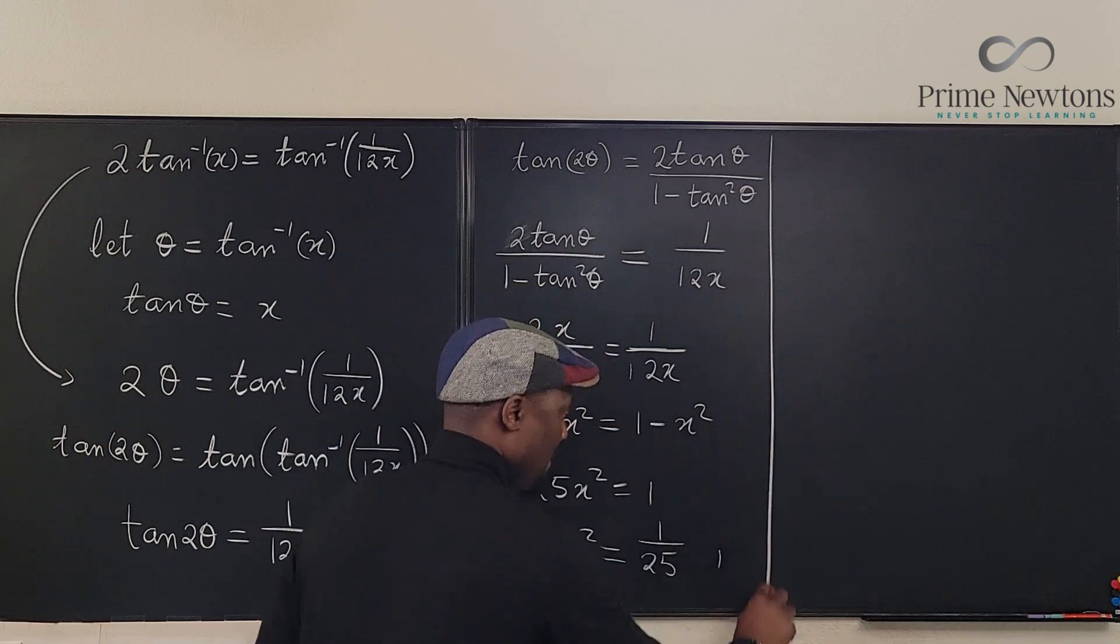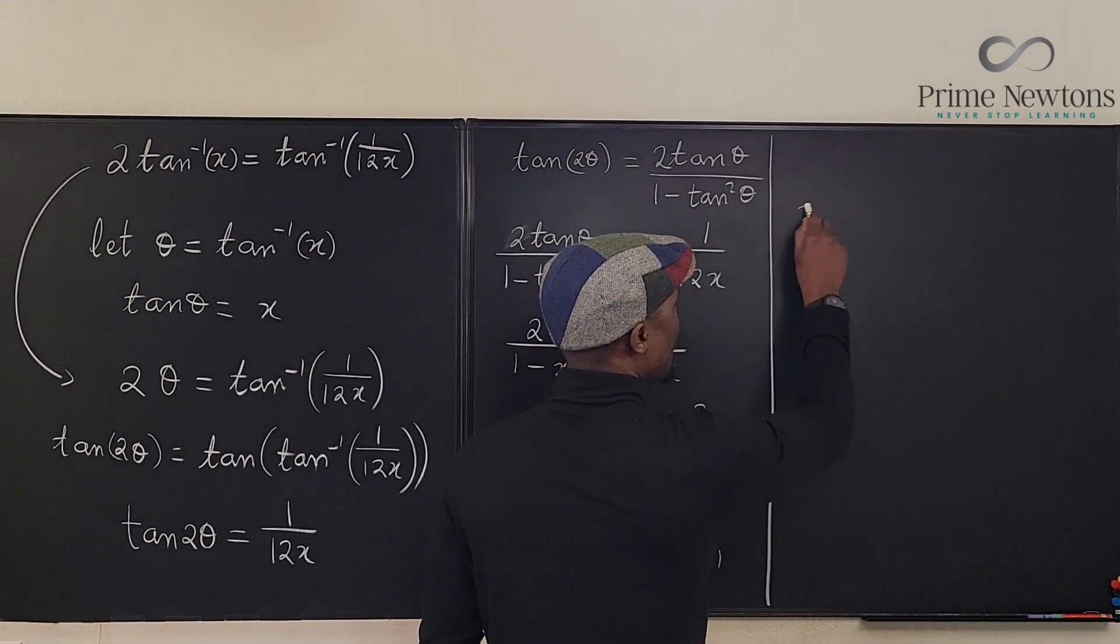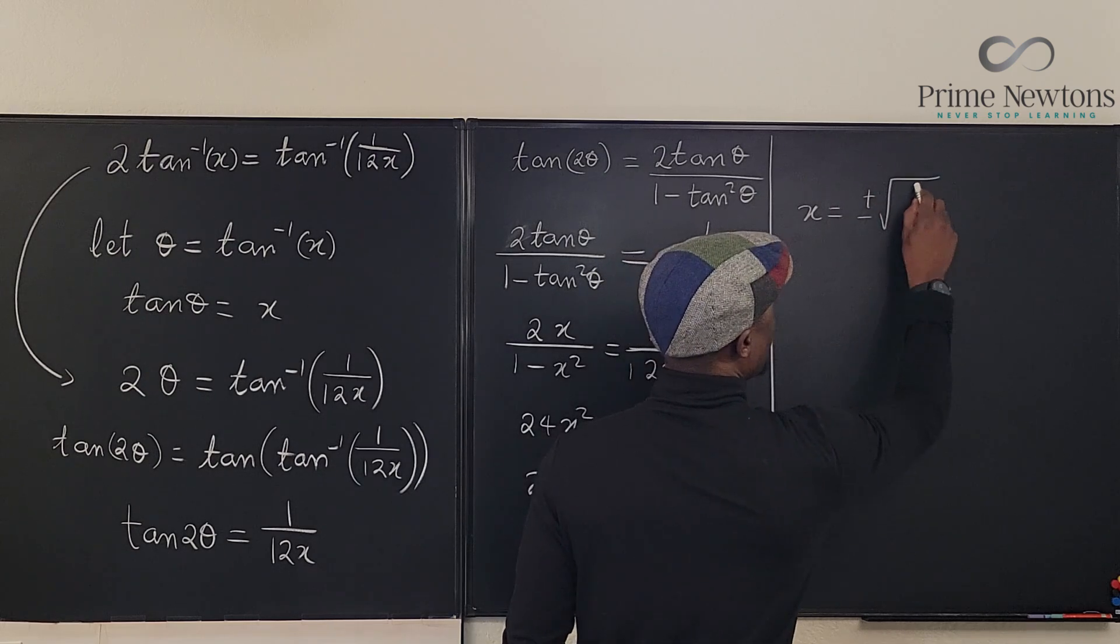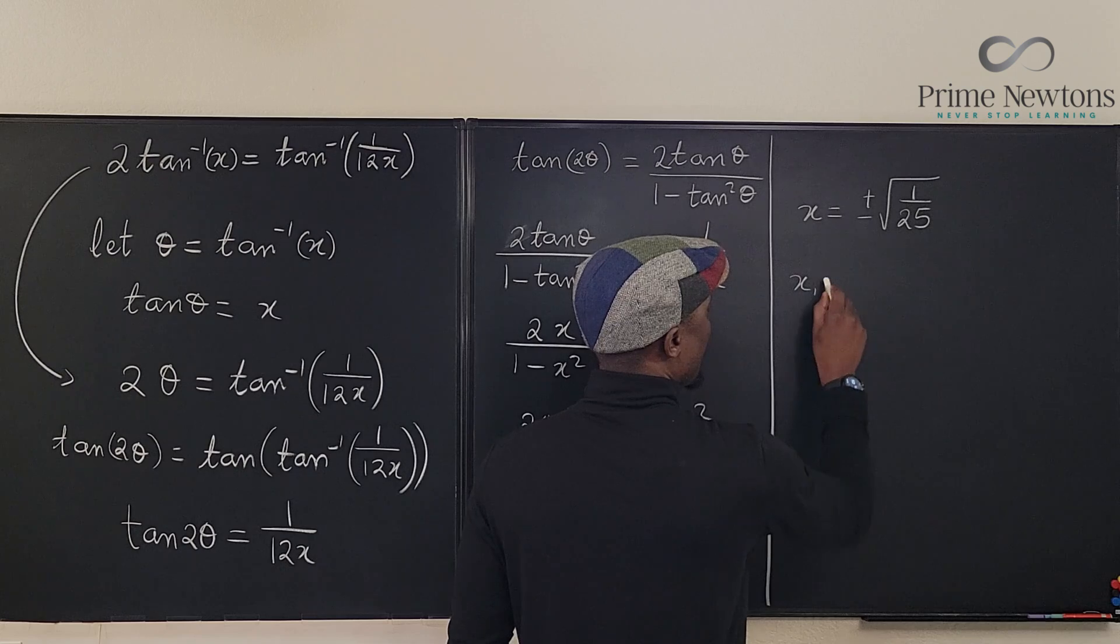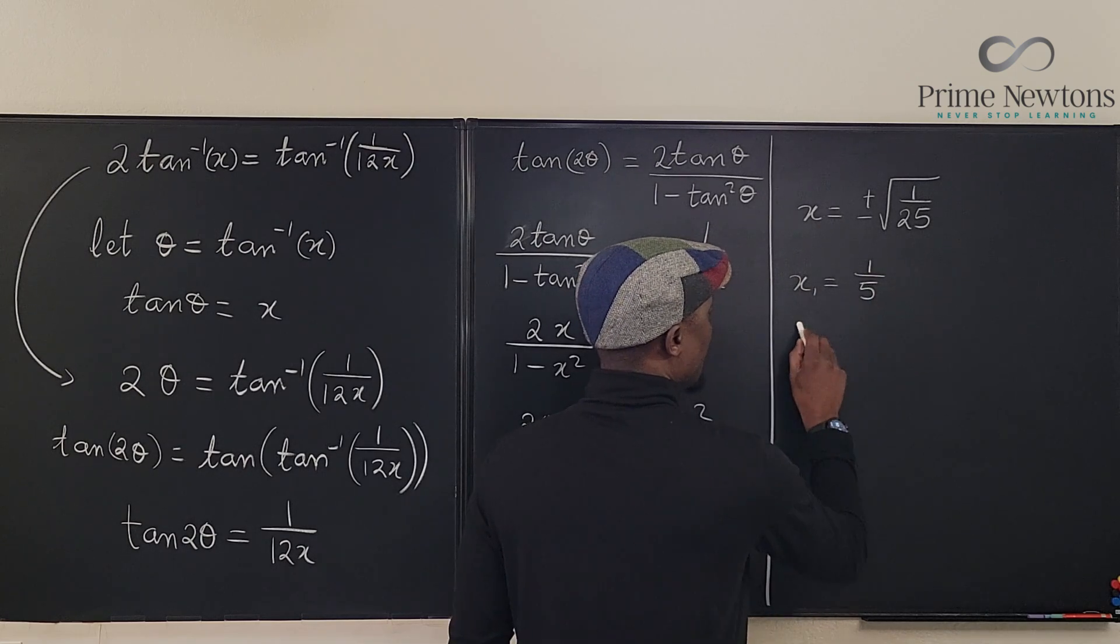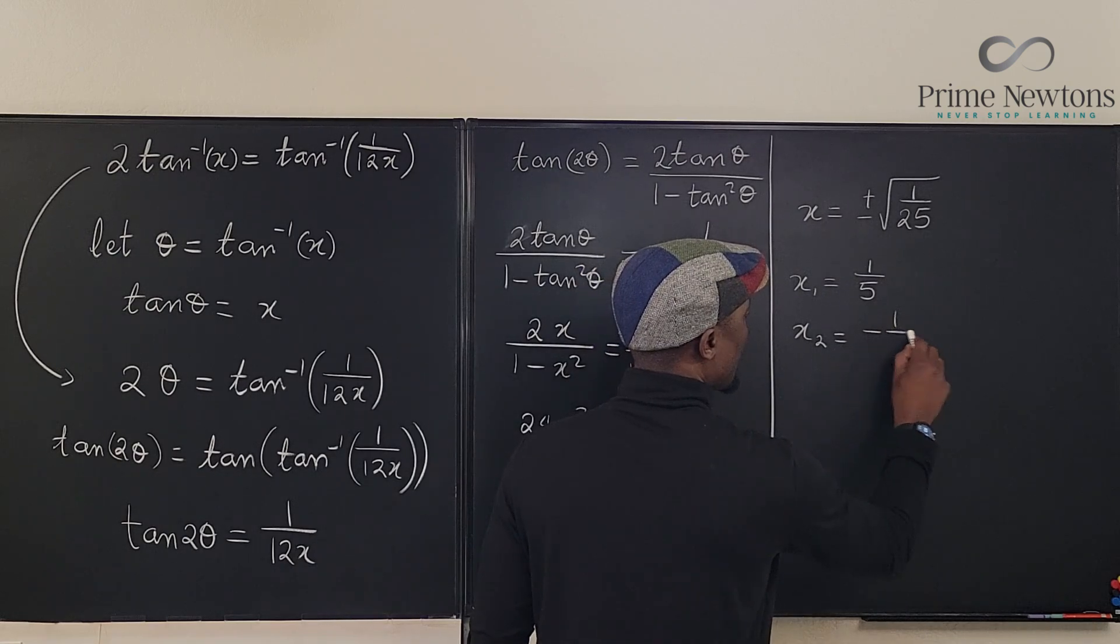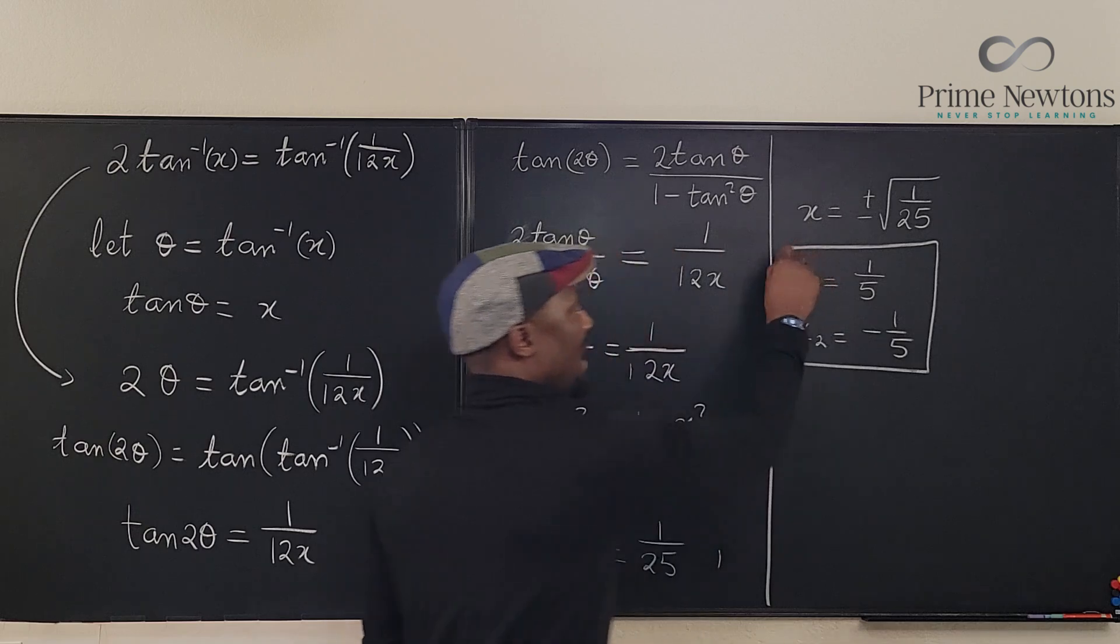Well, it clearly means that x is the square root of 1 over 25. So x is equal to plus or minus the square root of 1 over 25. So that x is equal to 1 over 5, and x2 equals minus 1 over 5. And these are the two possible answers for the values of x.